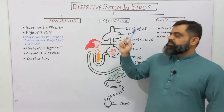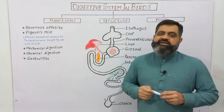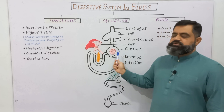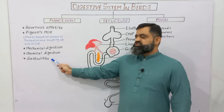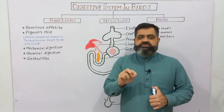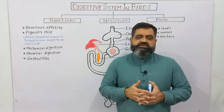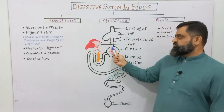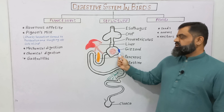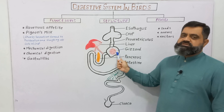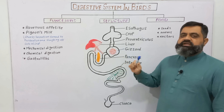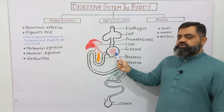Since birds' beaks do not contain any teeth, mechanical digestion takes place in the gizzard. For this purpose, birds swallow gastroliths — grits or small pieces of stones from their surroundings. These gastroliths help in the grinding of food inside the gizzard, whose walls are muscular and very strong, so food is ground effectively there.